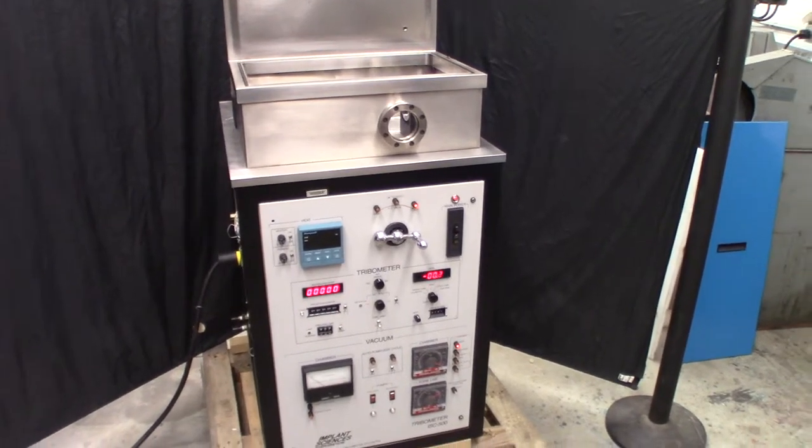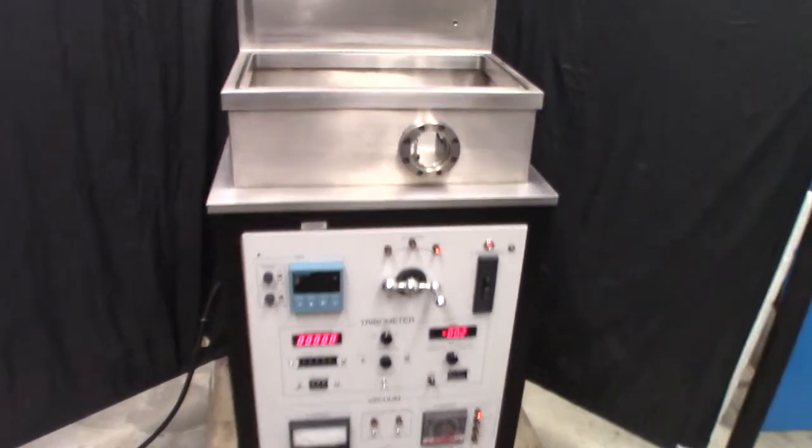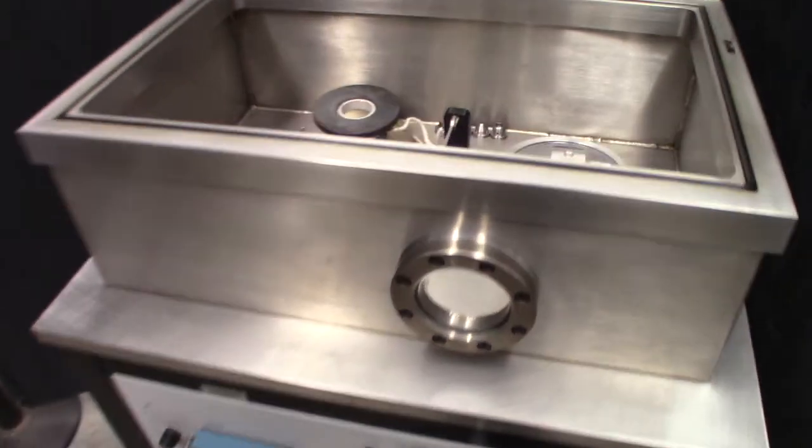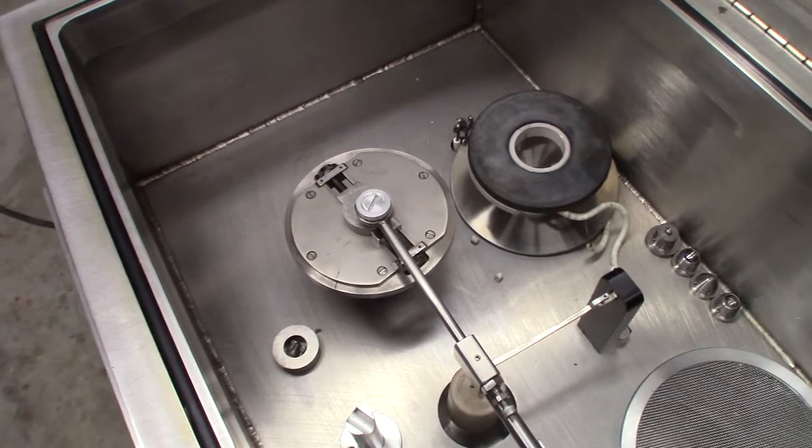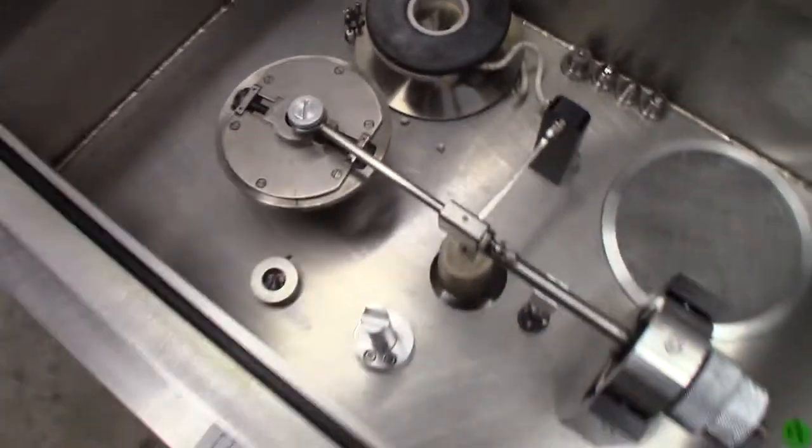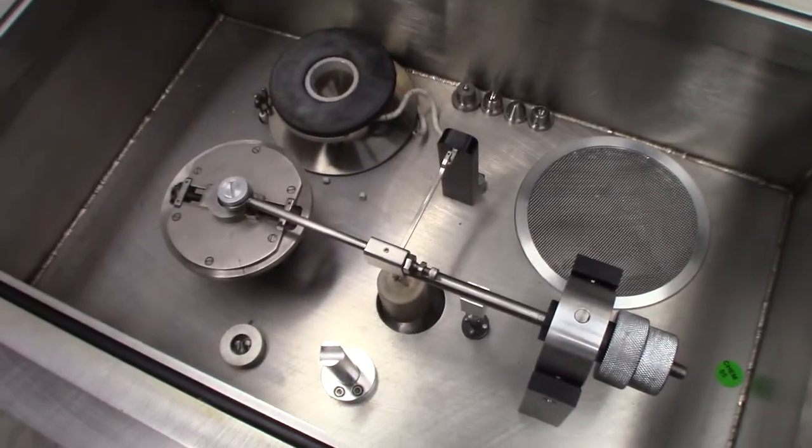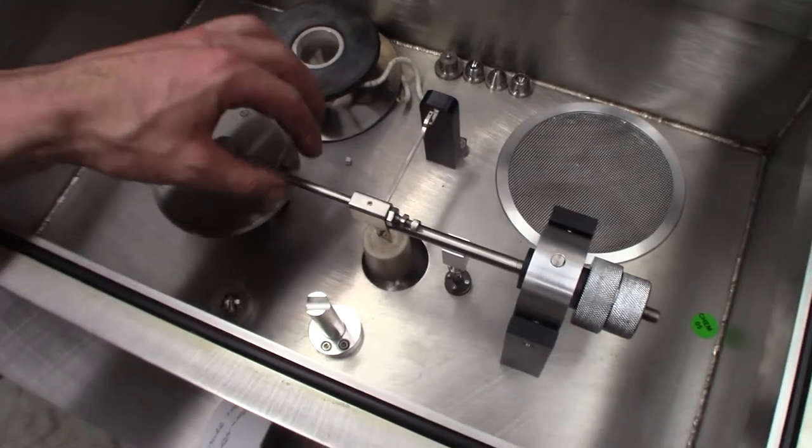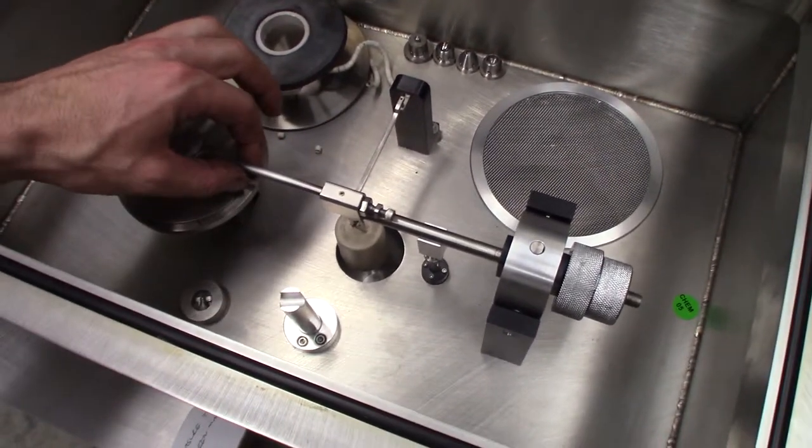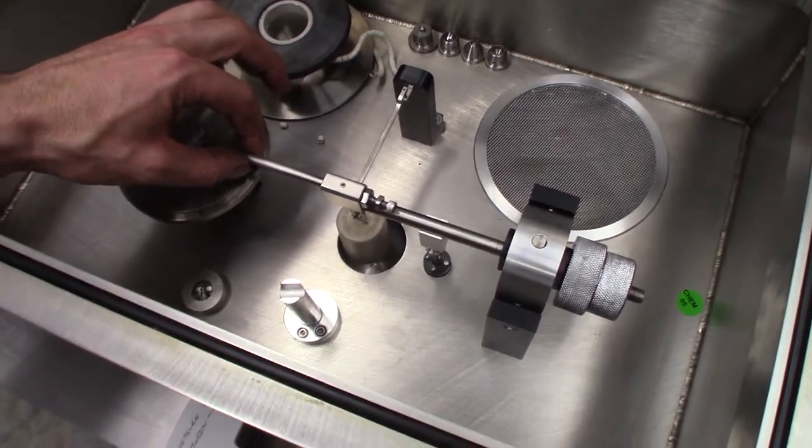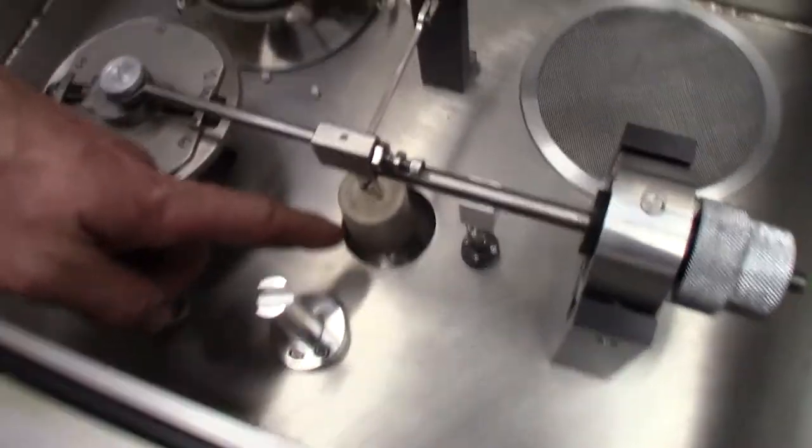It uses the pin-on-disc method for measuring friction. So you have this mechanism here which is a counterweighted rod which you can lift up and down, and there is a hanging weight down here which applies force to your specimen.